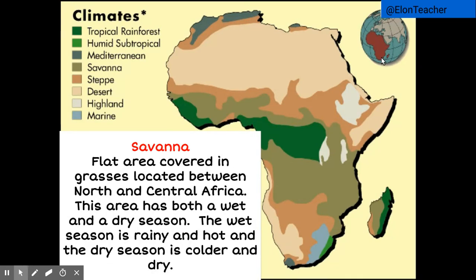Next is the savanna climate. You may recognize this type of climate from the Lion King. Savannas are flat areas covered in grasses located between North and Central Africa. This area has both a wet and a dry season. The wet season is rainy and hot, and the dry season is colder and dry.